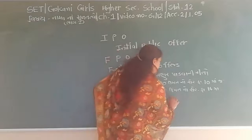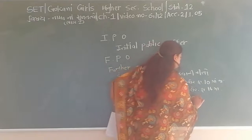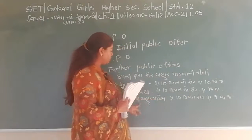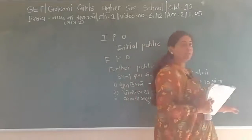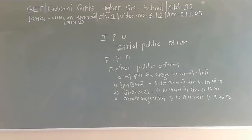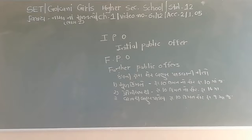ત્રીજી રીત: વટાઉ (at discount) - દર્શની કિંમત કરતાં ઓછી કિંમતે. ઉદાહરણ તરીકે ₹10 ની કિંમતનો શેર ₹9 માં બહાર પાડે, તો ₹1 નો ડિફરન્સ એ 'વટાઉ' (discount) ગણાય. આ રીતે ₹10 ની કિંમતે (at par), ₹10 થી વધુ (at premium) અને ₹10 કરતાં ઓછા (at discount) - એ ત્રણ રીતે શેર બહાર પાડી શકાય.